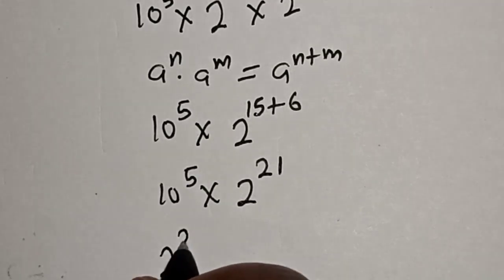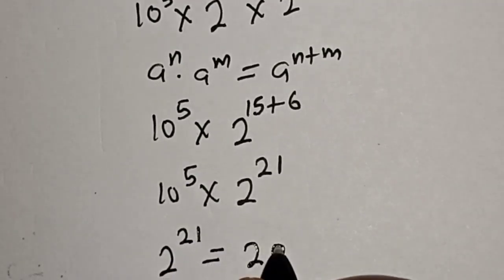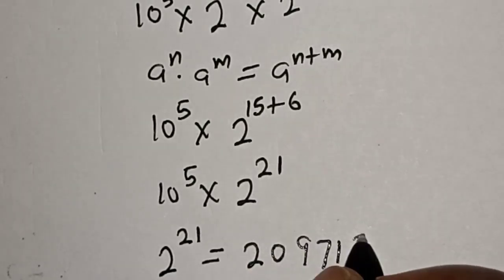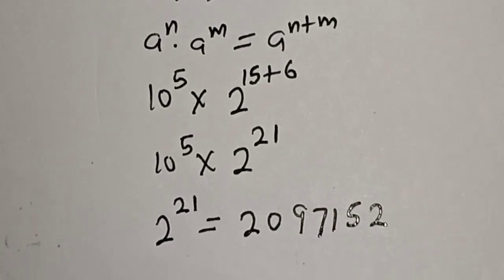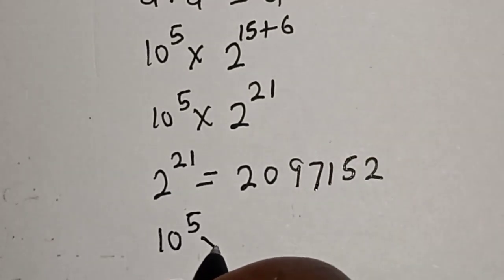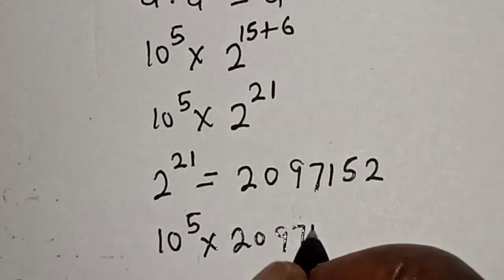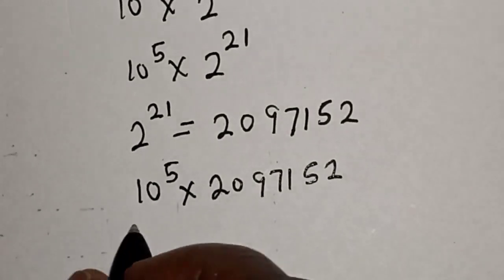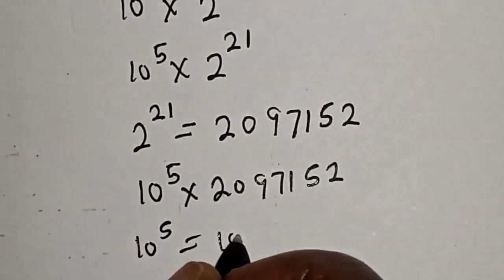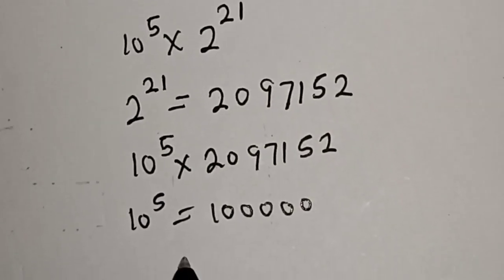2 raised to power 21 is equal to 2,097,152. Then we have 10 raised to power 5 multiplied by 2,097,152, and 10 raised to power 5 is equal to 100,000.